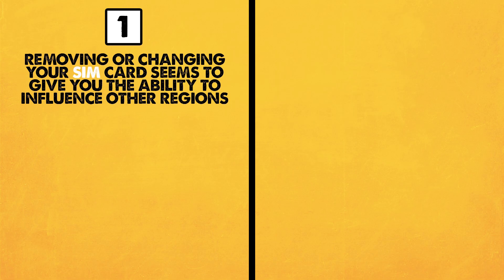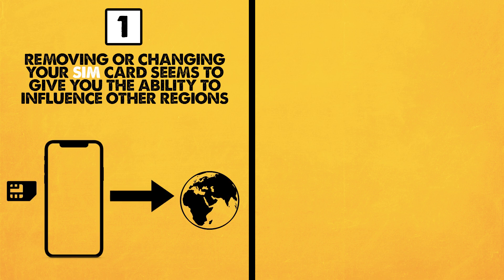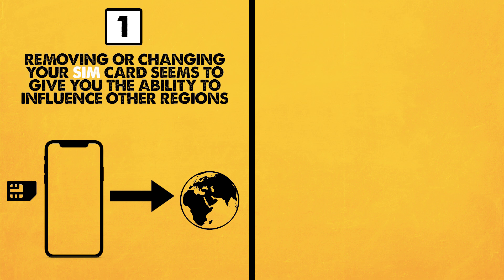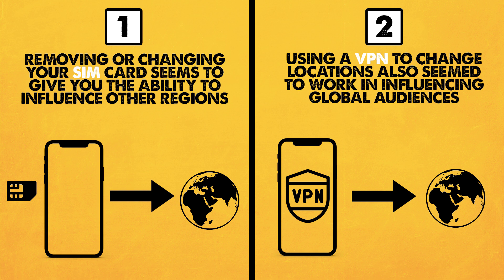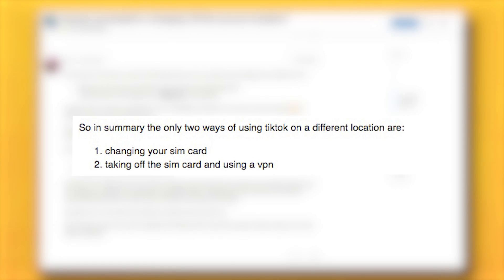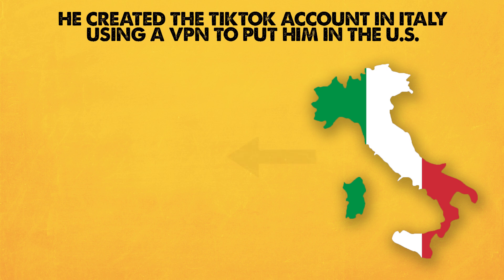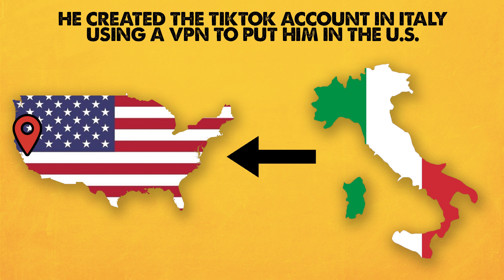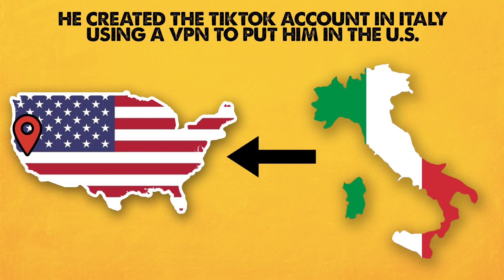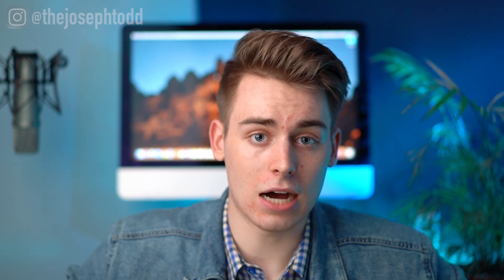There are essentially two things I took away from this experience. Number one: changing your SIM card or removing it seems to give you the ability to influence other nations. Whether or not you have to actually be physically present in the country you want to influence, I'm not 100% certain — I never really tried changing my SIM card while in the US, but it did work for me in Russia. Number two: using a VPN, a virtual privacy network, also seemed to work for me. I looked into this further and it seems some people have had success with this while others don't. Recently, while researching for this video, I spoke to someone on a consulting call who lives in Italy, and he created his account using a VPN to put himself in Los Angeles, California, and he's currently influencing primarily US-based audiences. Keep in mind, he did create his account while doing this, but it's testimony to the fact that it can work for some people. I'll leave the exact VPN that I used down in the description in case you want to check it out.